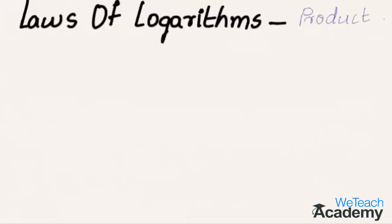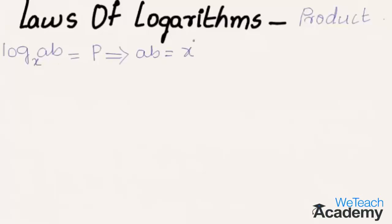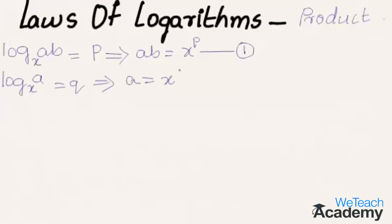Let us consider log ab to the base x, which is equal to p. This logarithm function can be written in exponential form as ab equals x to the power p — let us mark this as equation 1. Now let us consider log a to the base x equal to q, which implies a equals x raised to the power q. This is equation 2.